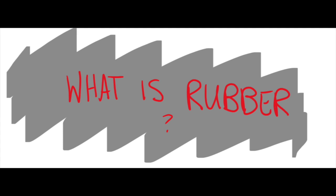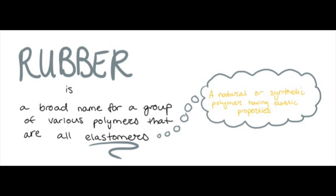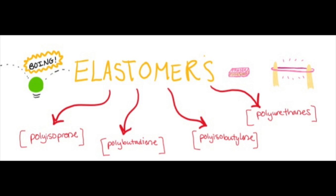So what is rubber? Well, rubber is the broad name for various polymers that are all elastomers. What is an elastomer? Elastomers are a natural or synthetic polymer which have elastic properties. For example, polyisoprene or natural rubber, polybutadiene, polyisobutylene, and polyurethanes.